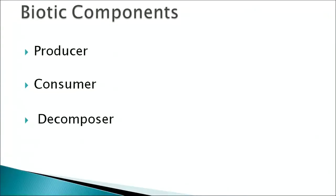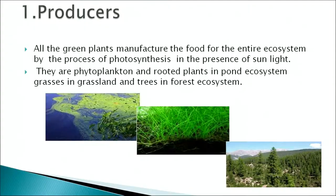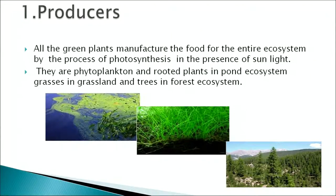The biotic components of an ecosystem are the producers, consumers and decomposers. All the green plants that manufacture food for the entire ecosystem by the process of photosynthesis in the presence of sunlight are the producers. They are also called autotrophs. In an aquatic ecosystem they are the phytoplanktons and rooted plants, while on the terrestrial ecosystem these are the grasses and trees in the forest ecosystem.